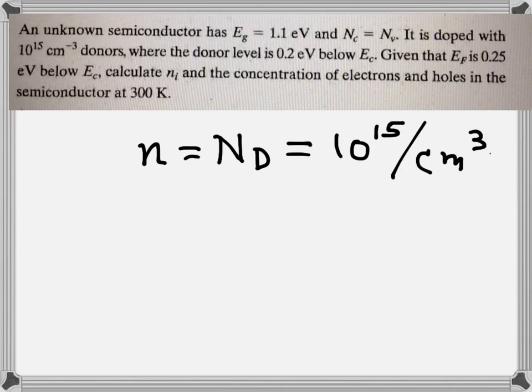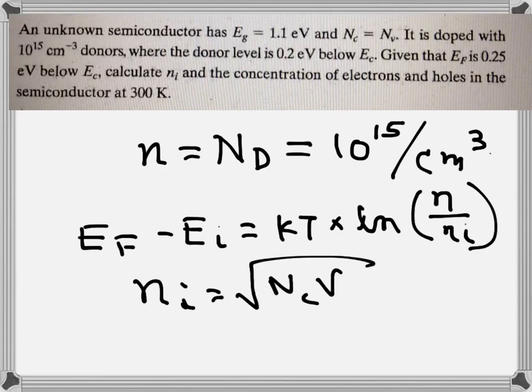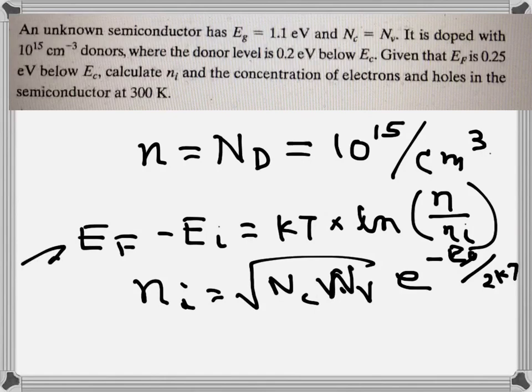It says that the donor level is 0.2 electron volts below EC, and EF is 0.25 electron volts below EC. So we can use this formula: EF minus EI is equal to kT times ln N over NI. To find NI we could also use NI is equal to square root of NC times NV, and here NC and NV are the same, then e to the power minus EG over 2kT.